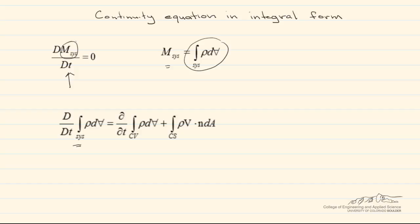...is equal to the time rate of change of the mass of the contents of the control volume. Notice that it's integrated over the control volume, plus the net rate of flow of mass through the control surfaces. Recall that this can mean one control surface, two control surfaces, any number of control surfaces where the fluid enters and or exits the control volume.